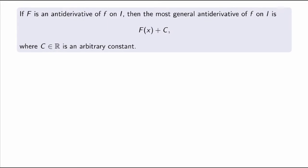I can summarize this in the following statement: if capital F is an antiderivative of little f on some interval I, then the most general antiderivative of f on I is going to be capital F plus an arbitrary constant c. It is standard notation to use the capital letter c to denote this arbitrary constant for the general antiderivative of a function.